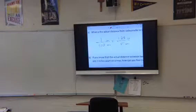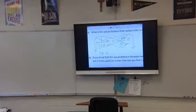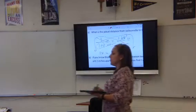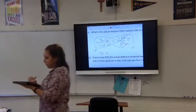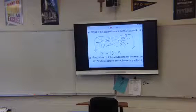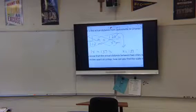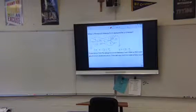So we're going to cross-multiply the 1 times the x and get 1x. What is 110 times 1.25? 137.5. Is my answer going to change if I divide by 1? No. So x equals 137.5, and that is miles.